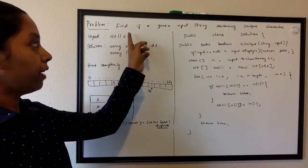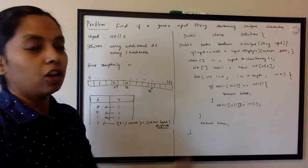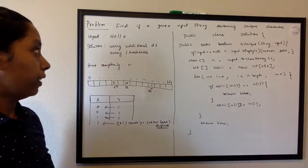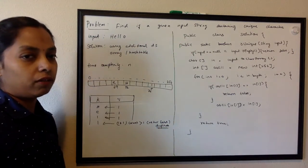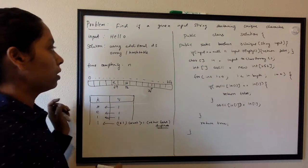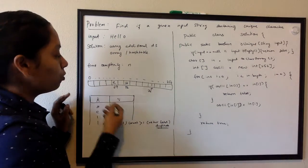We're going to look at a problem: find if a given input stream contains all unique characters. If it has any duplicate character, then we have to return false. If it is unique, then return true. So the output would be true or false.